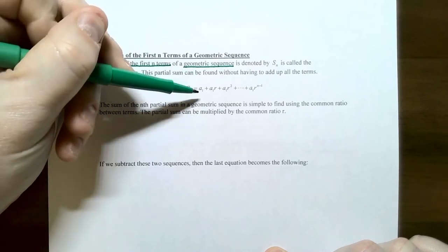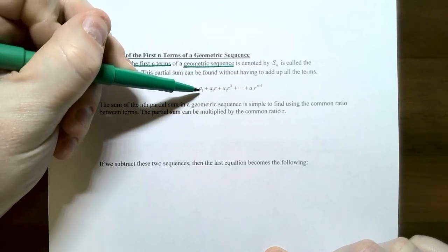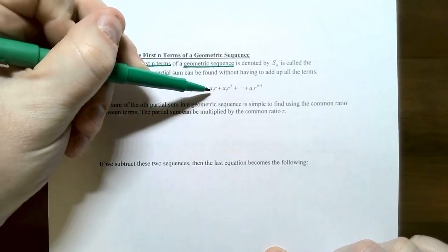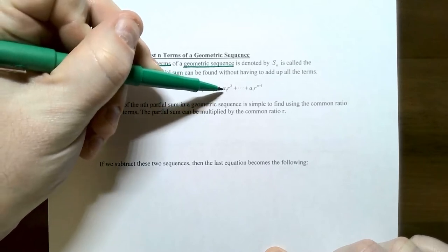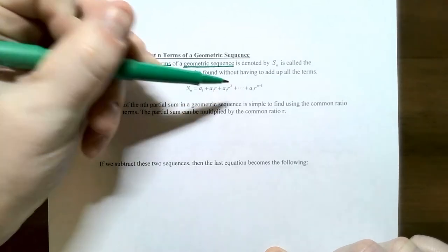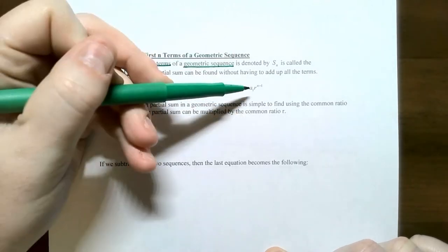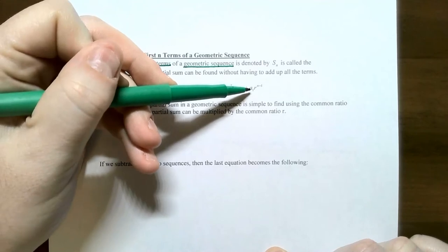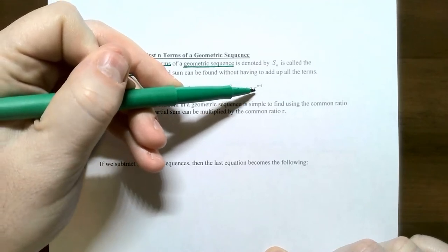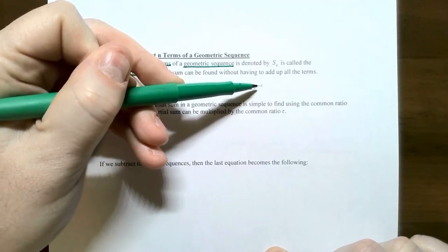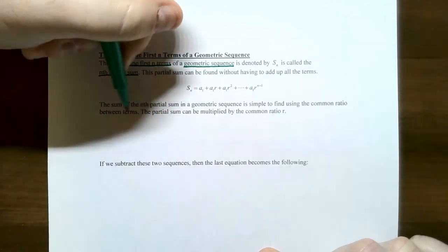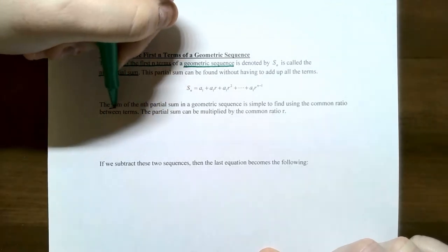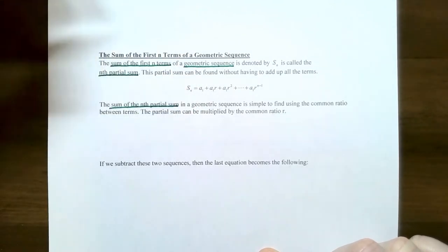The first term of a geometric sequence is a sub 1. The second term, as we saw in the previous video, is a sub 1 times r. The third term is a sub 1 times r squared. And the nth term is the first term a sub 1 times the common ratio r to the n minus 1 power.